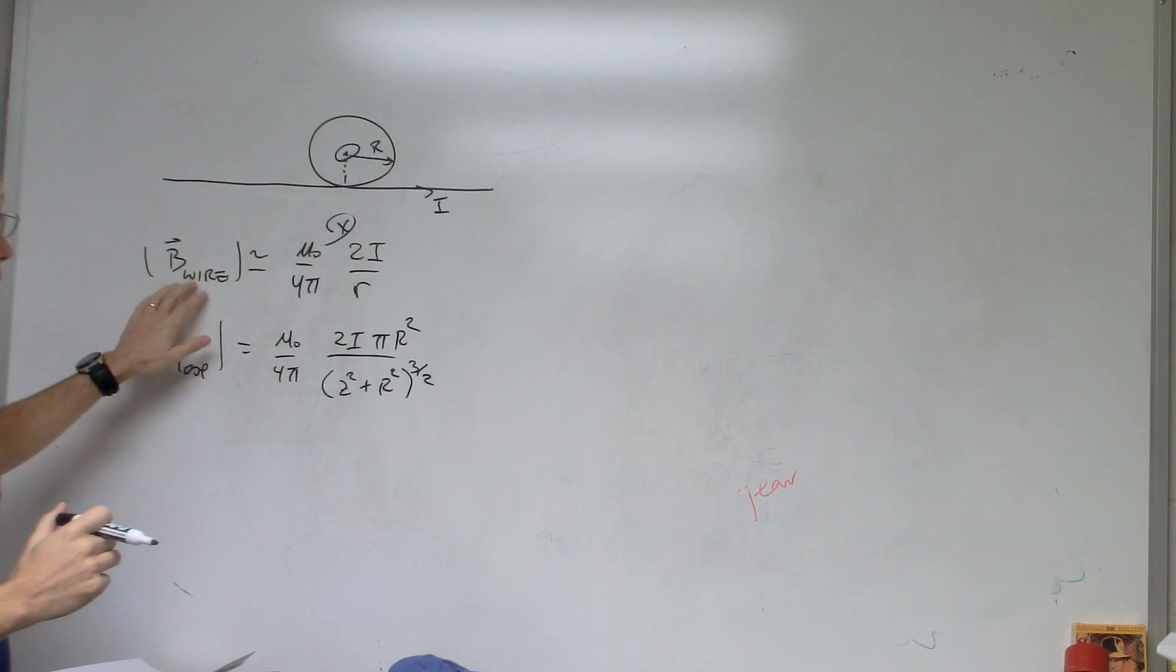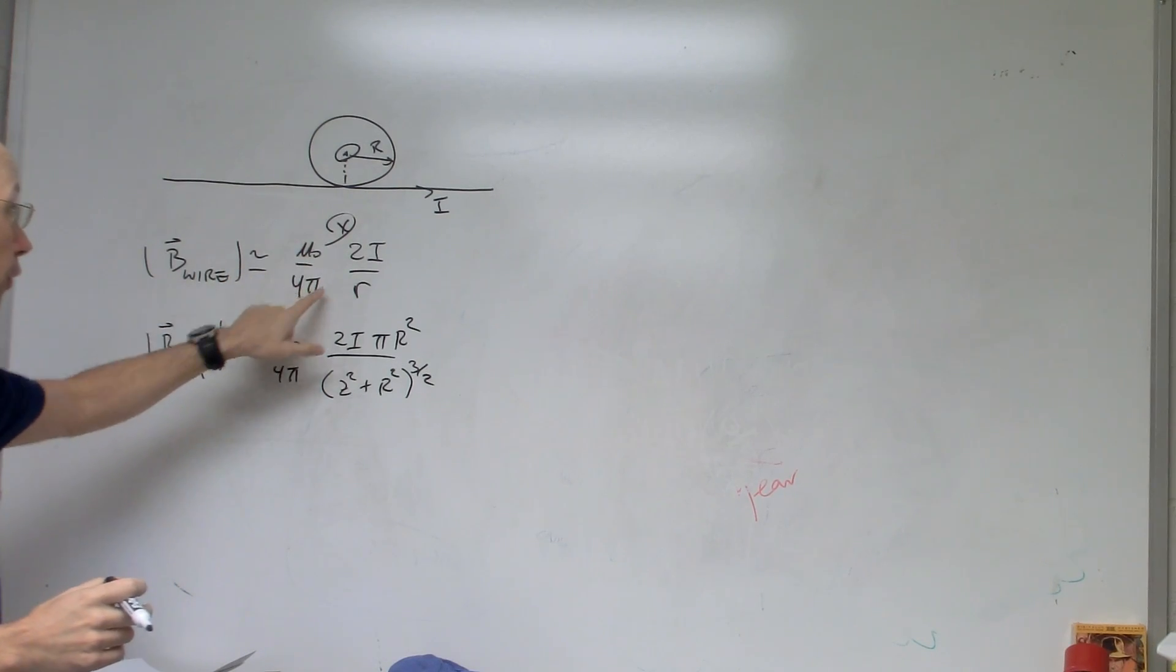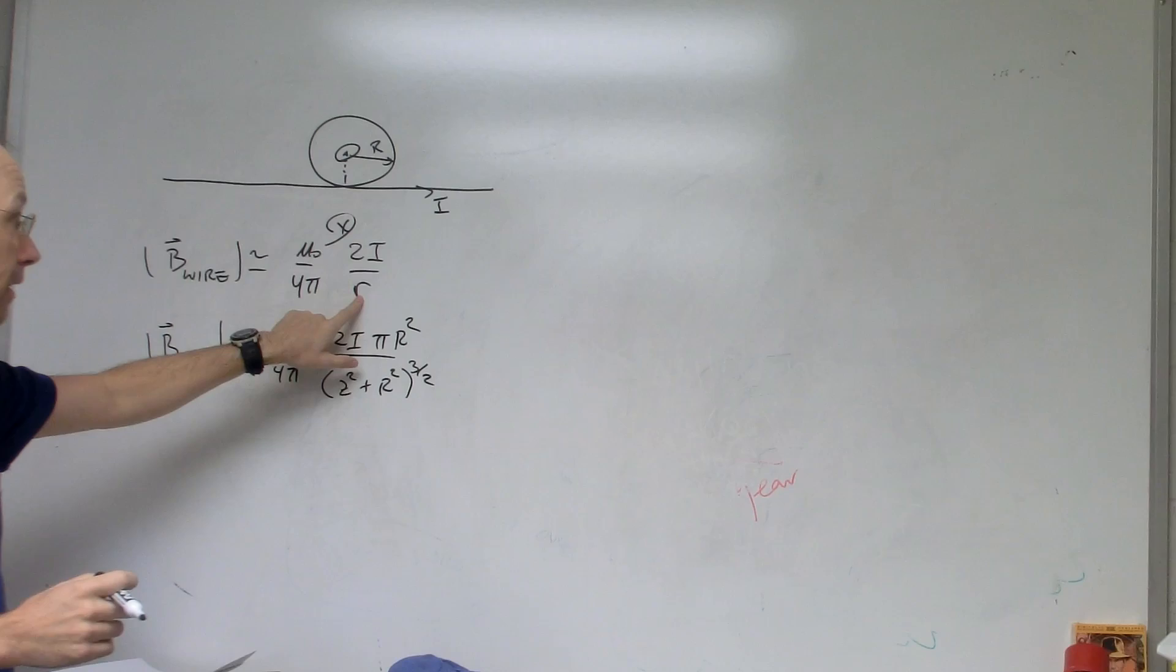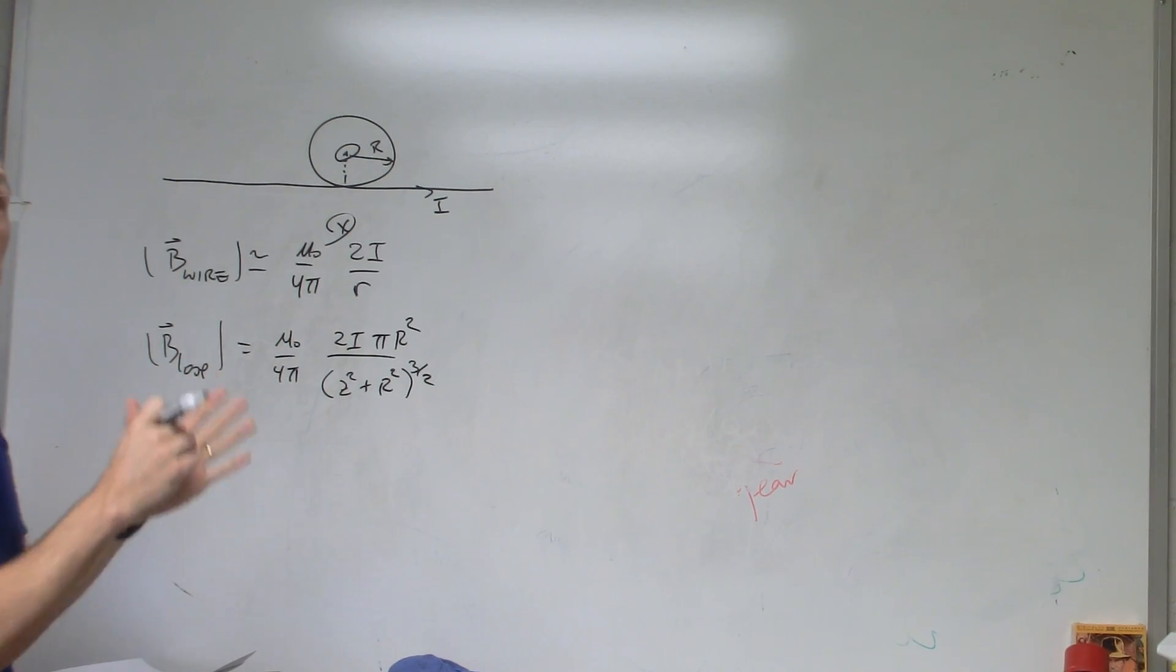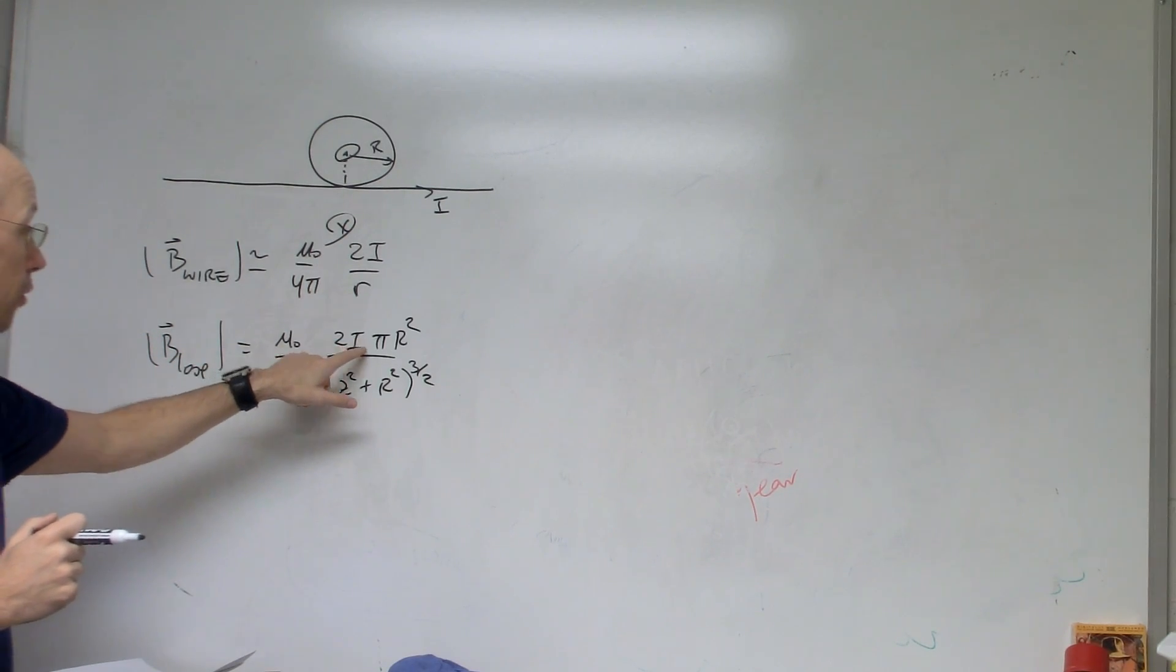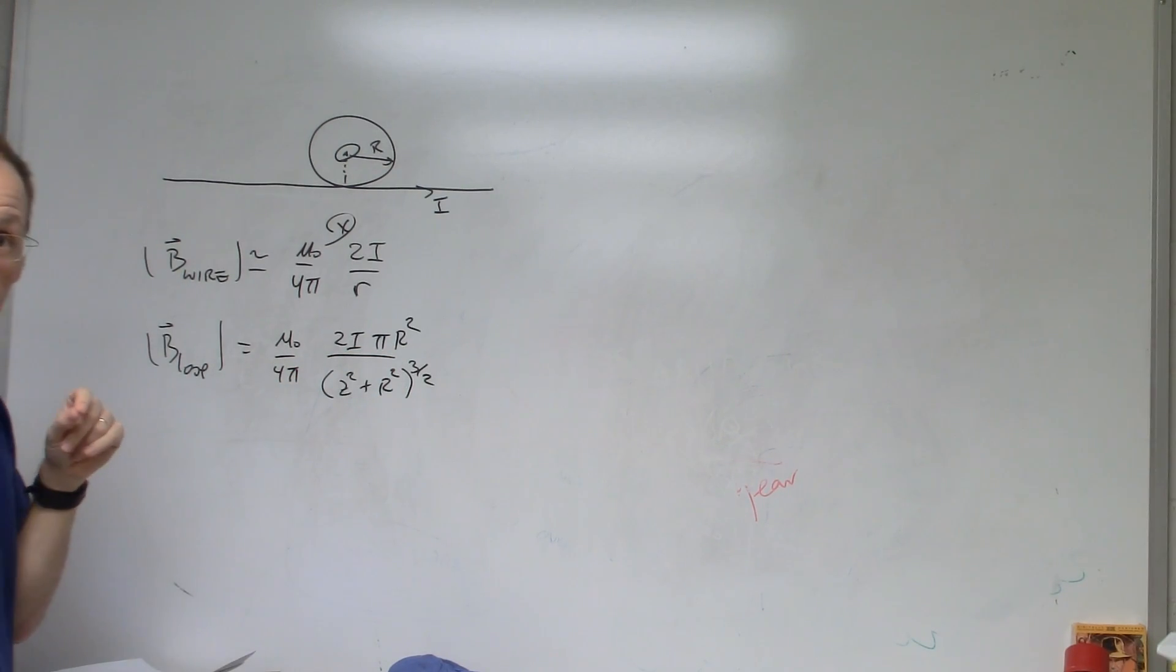We've already derived the magnetic field due to a wire. And if it's a long wire, which this is, then it's just mu naught over 4 pi, 2 times the current, and this is the distance from the wire. The magnetic field due to a loop along the axis going through the center of the loop is mu naught over 4 pi, 2i pi r squared is the radius of the loop, and z is the distance along the axis.